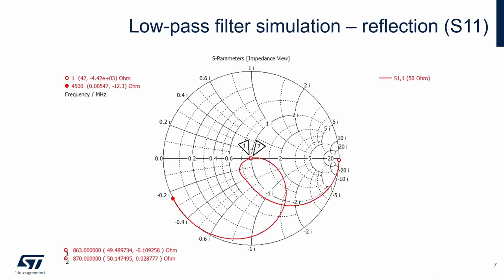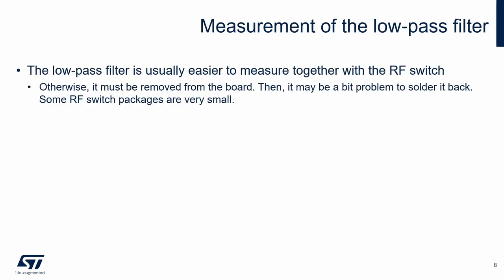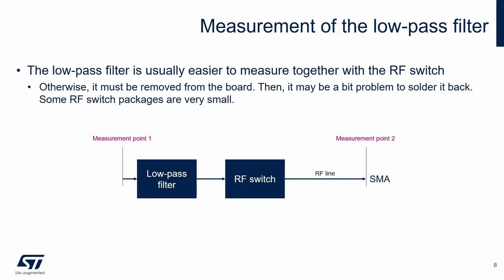The simulation of S11 shows approximately 50 ohms in the working band. For practical reasons, it is usually easier to measure the low-pass filter together with the RF switch; otherwise it must be removed from the board. In our case, the measurement points of the low-pass filter are before the filter and on the SMA connector. The RF switch and the RF path have an impact on the measurement, but this influence can help to better fine-tune the low-pass filter.